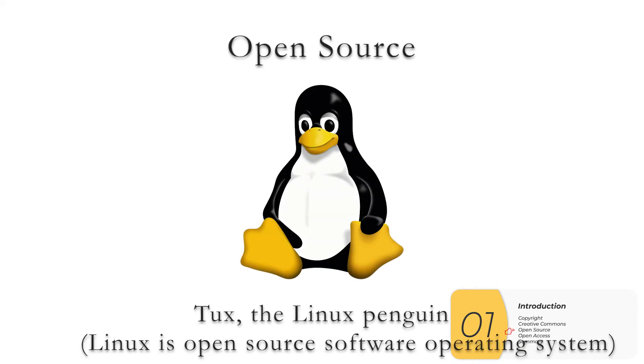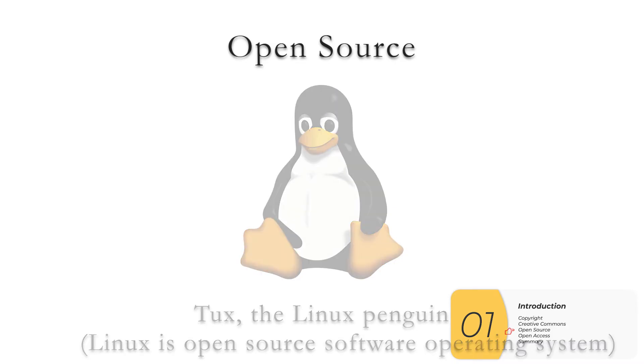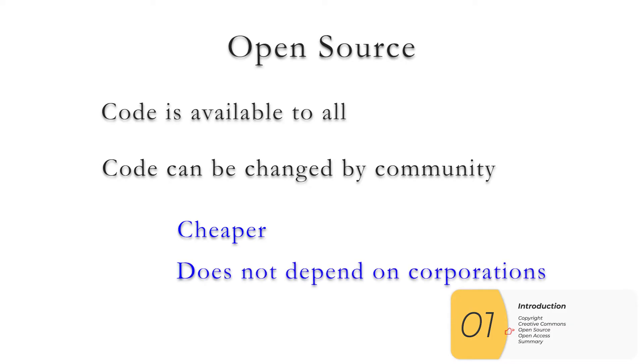This is Tux, the Linux penguin, maybe the icon most commonly associated with open source. Open source means that code, the source code, is available to all. And this means that it can be changed by the community. Usually software that's open source is cheaper than commercial software. And you're also not at the whims of the company, meaning that if the company decides they're not going to sell the product anymore, you still have the code. So you could compile the code and run the code. You might see a question on the exam that asks about advantages of open source software. And so here they are.